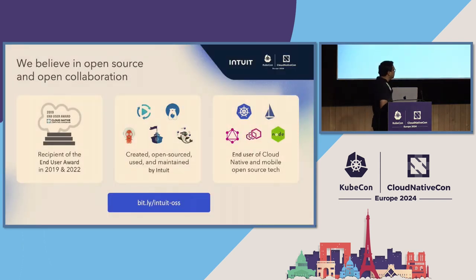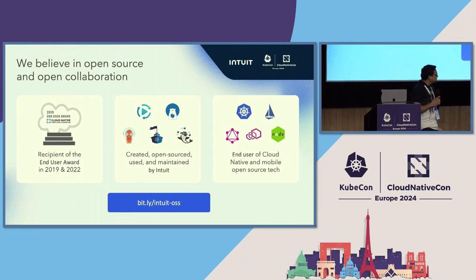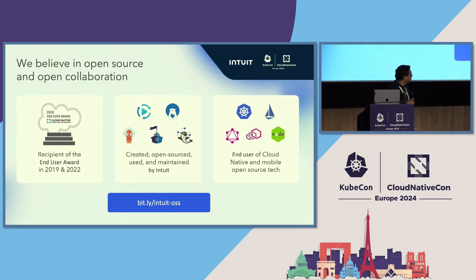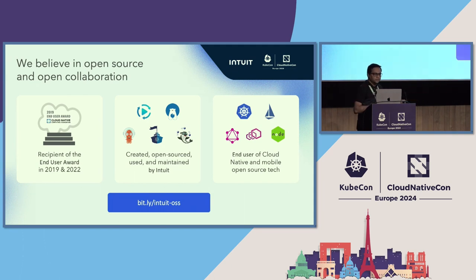Let's get started. What is Intuit and what we have done. Intuit is a fintech company based out of the US and it has accounting and tax products. We believe in open source and some of our open source contributions are Argo and Admiral. We are also end-user customers of Kubernetes, Istio, and Prometheus.